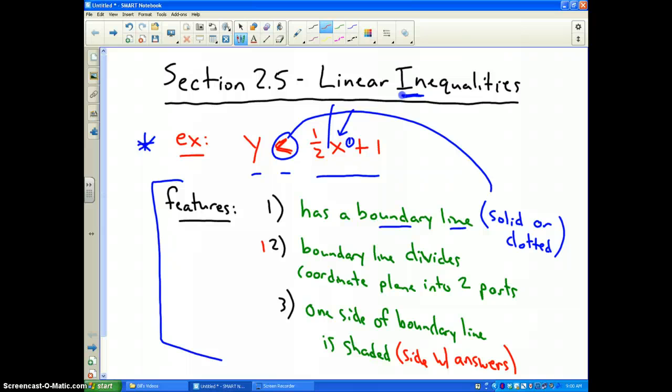Now, the boundary line, number two, divides the coordinate plane into two parts, and the key about that is number three. Only one side of the boundary line will be shaded, and that side is the side that has the answers.